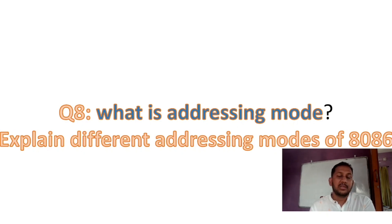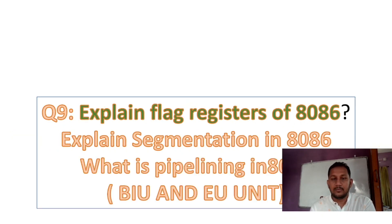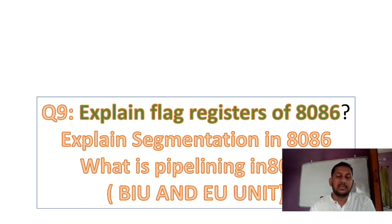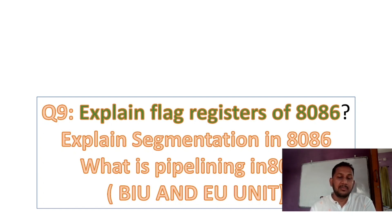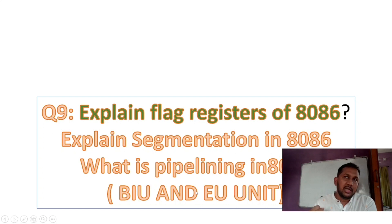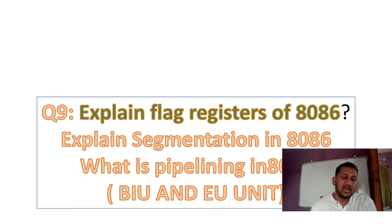Question 8 also covers: What is Addressing Mode? Explain Flag Registers of 8086. What is Pipelining in 8086? In 8086, we follow a pipeline concept because the 8086 block diagram has units like BIU — Bus Interface Unit — and EU — Execution Unit. We provide data and execute using a parallel processing pipeline concept through BIU and EU units.